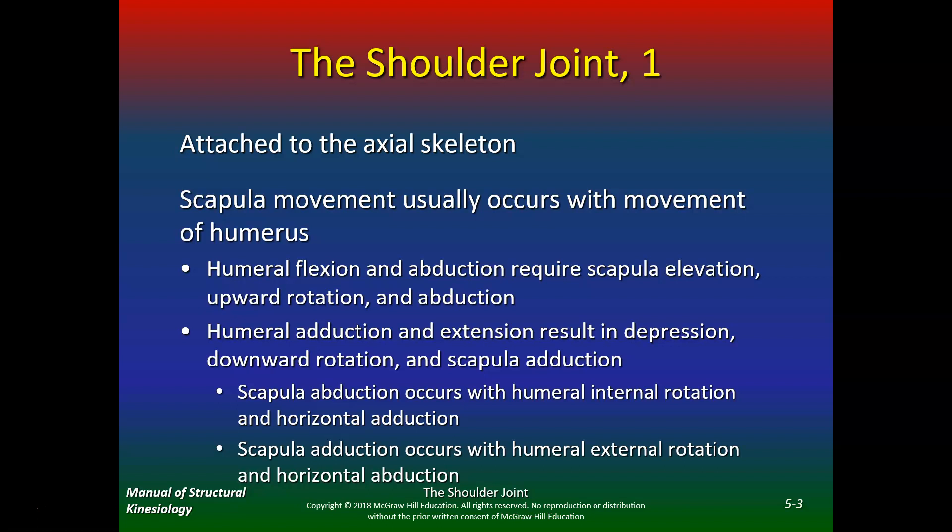Glenohumeral flexion and abduction requires scapula elevation, upward rotation, and abduction. So if your scapula is tight, it will affect glenohumeral flexion and abduction. Humeral adduction and extension result in depression, downward rotation, and scapula adduction.